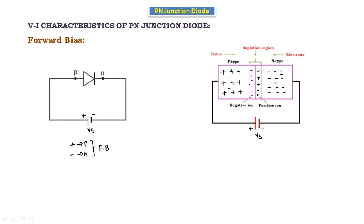In this depletion region there is no movement of charge carriers. That's why we apply an external supply voltage to get movement of the charge carriers. This external supply voltage should be greater than the barrier potential, then the diode starts conducting. In the P-type and N-type, the positive and negative carriers move toward the junction when we apply forward bias.